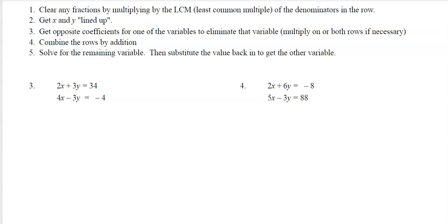I'm trying to get opposite coefficients for one of the variables because I want to eliminate that variable. Sometimes I'll have to multiply one or both rows if necessary. In this first example, I already have my opposites: positive 3y and negative 3y. I want opposites because I want to combine these rows by addition and it'll cancel out the y's. When I add these rows, I'll get 6x, the y's cancel out, and I'll get positive 30. Divide both sides by 6, I get x equals 5.